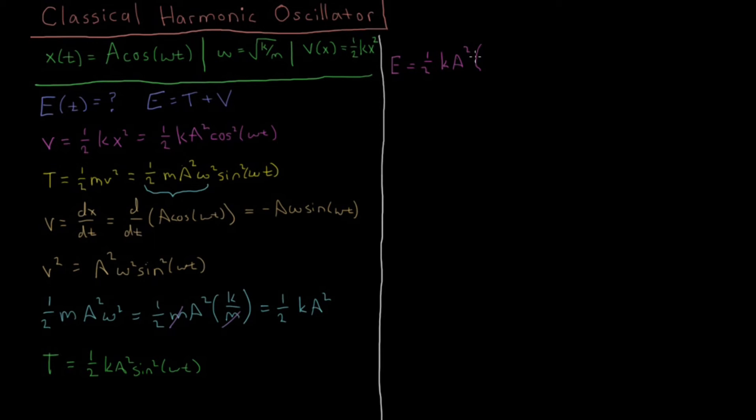from the potential energy V, we have cos²(ωt), and from the kinetic energy T, we have the sin²(ωt).